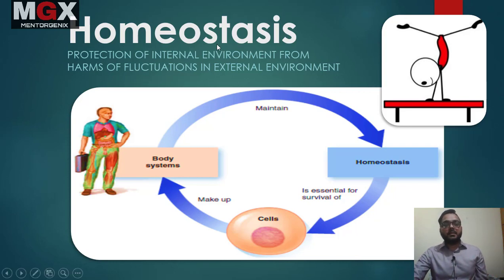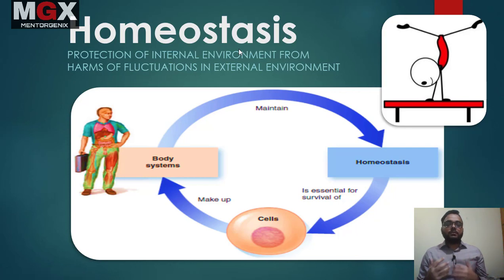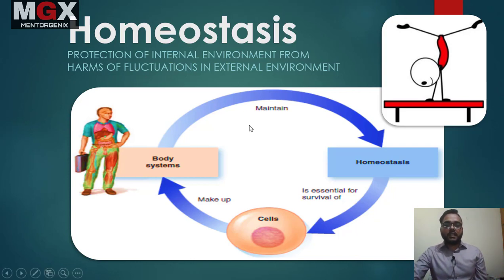Homeostasis is a combination of two words. 'Homeo' means similar and 'stasis' means to maintain — to keep a balance. These words are derived from Greek. This is a small diagram that explains it. Homeostasis is essential for the survival of cells.